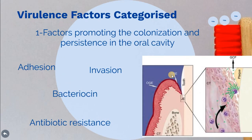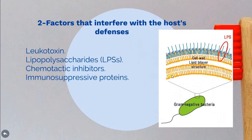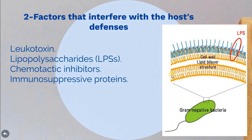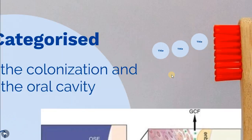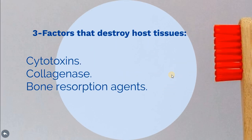Virulence factors are categorized first depending on factors that promote colonization or adhesion, in addition to invasion, bacteriocins, and antibiotic resistance. A second category is subdivided into leukotoxins, lipopolysaccharide, chemotactic inhibitors, and immunosuppressive proteins. While factors that destroy host tissue include cytotoxins, enzymes such as collagenase, and bone resorption agents.